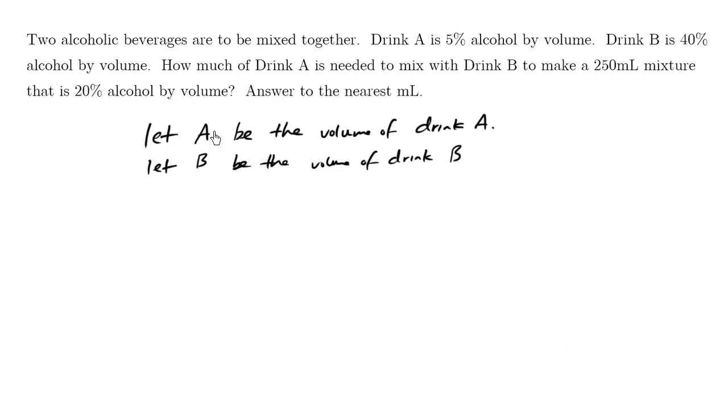So we know that we have this final drink. It's one cup. It's a 250 ml mixture. And A is the volume of drink A, and B is the volume of drink B for this final cup. So what can we say? We can say that A plus B equals 250.